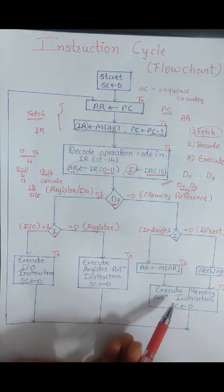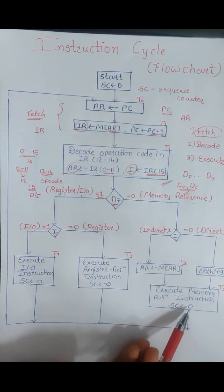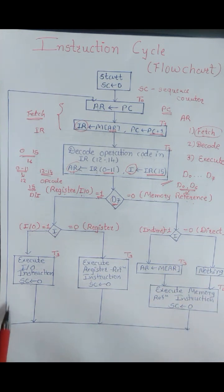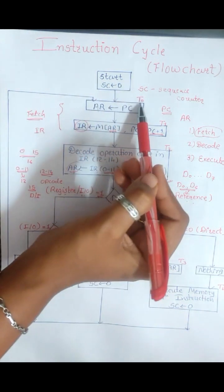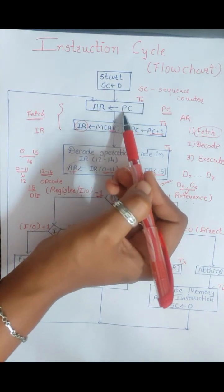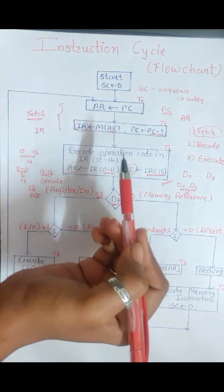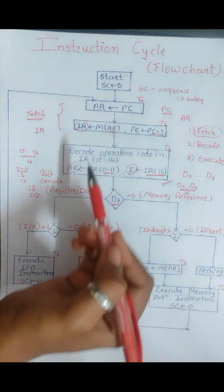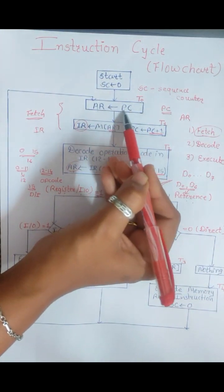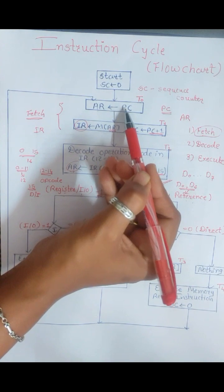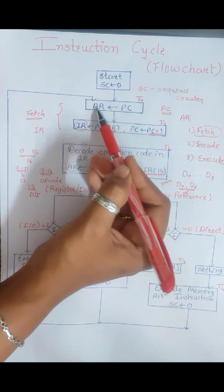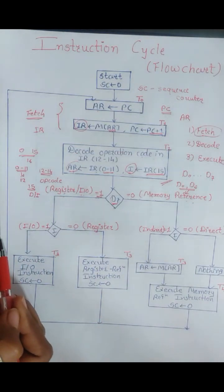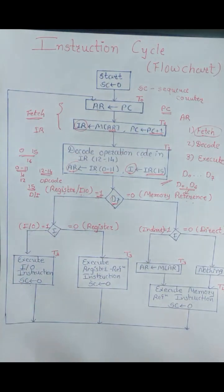For the memory reference instruction, the sequence counter is reset at the T4 timing signal. As you can see, after that the arrows go back to the T0 timing signal — that means it's a cycle. We are studying the instruction cycle, so again we are fetching the next address from the program counter and storing it at the address register. This is how the entire cycle goes on. This is all about instruction cycle. Thank you.